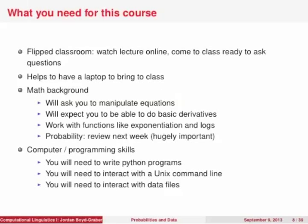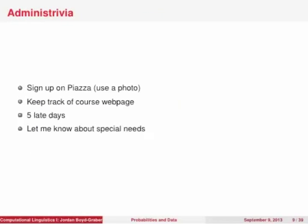This is a computational linguistics class, so we're going to be using programming languages and computers. You'll need to be able to write Python programs, interact with the Unix command line, interact with data files, and upload things to a server to turn in your homework. We're going to be using an online platform called Piazza — there's a link from the course webpage. Lectures will be posted there and you can comment and ask questions. Make sure you keep track of the course webpage, where homeworks and everything else will be posted.